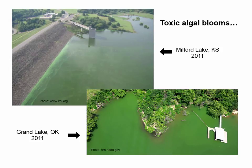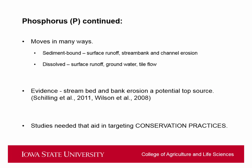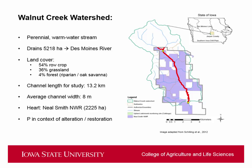Phosphorus can move in many ways — attached to sediment or in dissolved form. Attached to sediment, you've got surface runoff, stream bank erosion, and movement within the channel. Dissolved, it can move across the surface, through groundwater, and through subsurface tile drainage. Evidence is building that stream bank and bed erosion is becoming a potential top source — probably the biggest contributor of phosphorus. Studies are needed to target conservation practices based on sediment and soil characteristics, identifying where bank erosion and phosphorus hot spots are occurring.